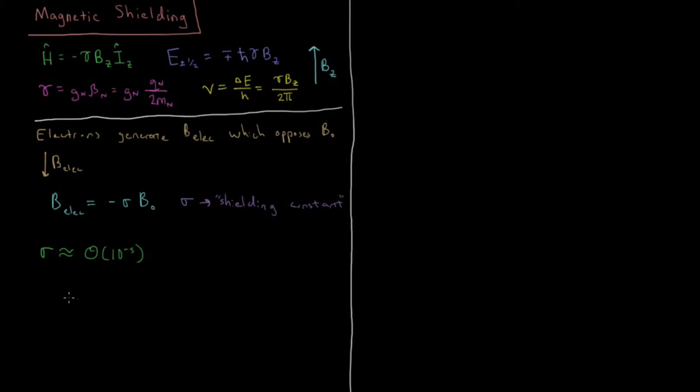That gives us a total magnetic field here. We're going to have BZ equals B-naught, the default value without any shielding, times one minus sigma. So this is our new magnetic field in the Z direction which our nucleus feels due to the decreased magnetic field of the shielding.